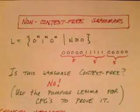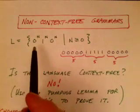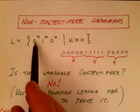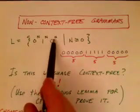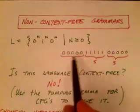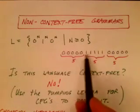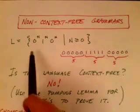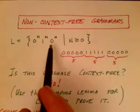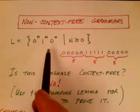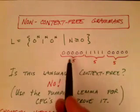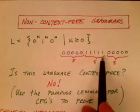Some languages are not context-free. Here's the canonical example: zero to the n, one to the n, zero to the n. For instance, five zeros, five ones, followed by five zeros. This language is simple — it's not hard to understand what's in it — but it is not a context-free language. We cannot find a context-free grammar to describe it.